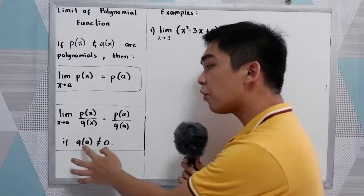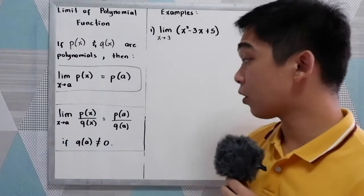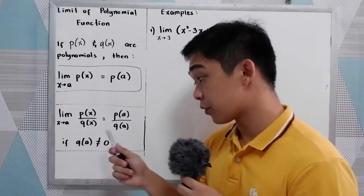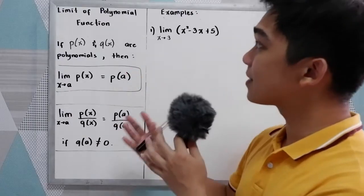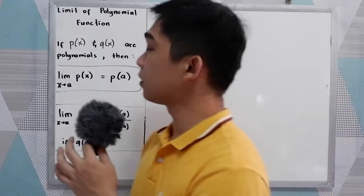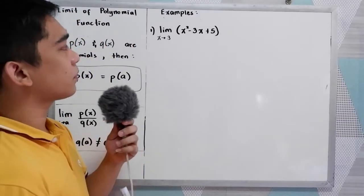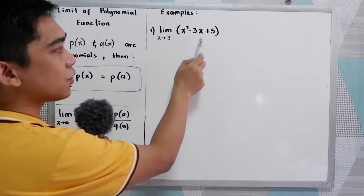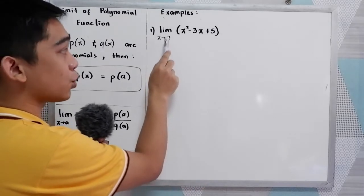Note that Q of A must not be equal to 0, because if our denominator Q of A equals 0, that will give us undefined. Now to apply the limit of polynomial function and the previous theorems, let's look at example number 1: the limit of X squared minus 3X plus 5 as X approaches 3.